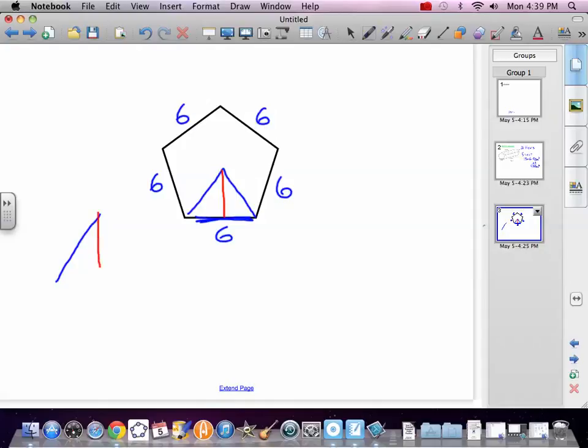We're going to cut the triangle, that big triangle in half. Because it's five equal triangles, that angle is 72 degrees. 360 divided by 5, which makes that angle 36.